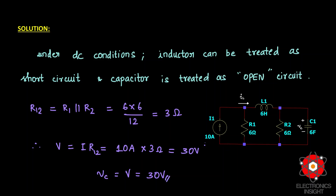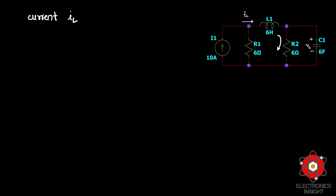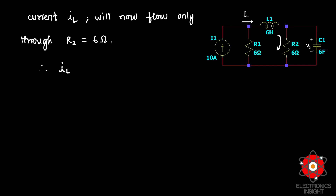To find the current through the inductor IL, since the inductor is a short circuit under DC, current flows through resistance R2 (6 ohms). Therefore, IL = V / R2 = 30 / 6 = 5 amperes.